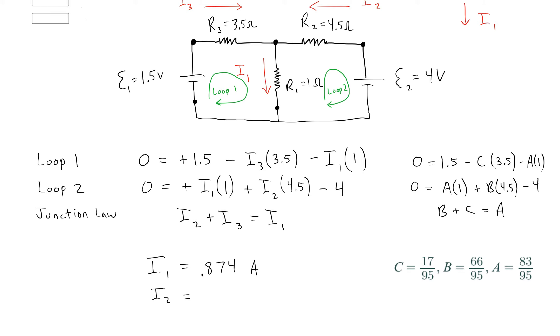But it's basically telling me that I1 is 83 over 95, which is 0.874 amps. And then I2 is going to be 66 over 95, which is 0.695 amps. And then I3 is 17 over 95, 0.179 amps. Alright, so that's good progress.